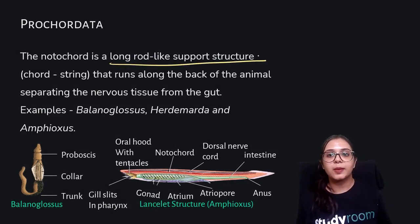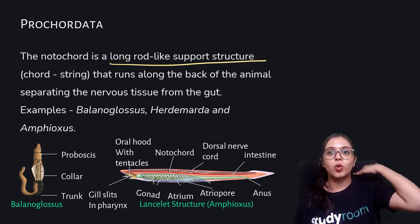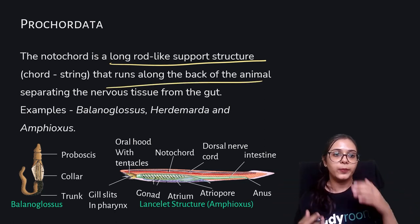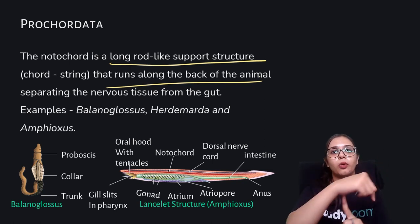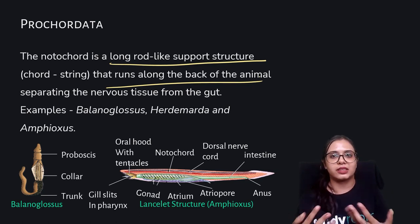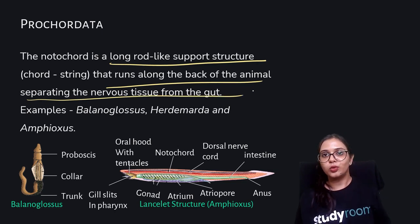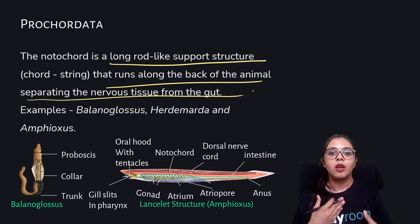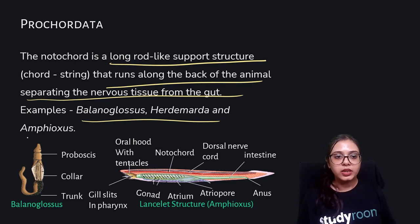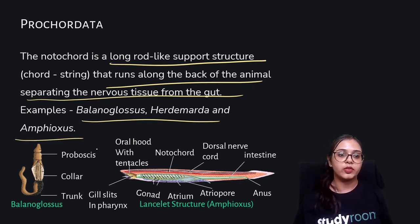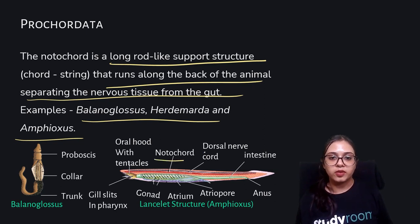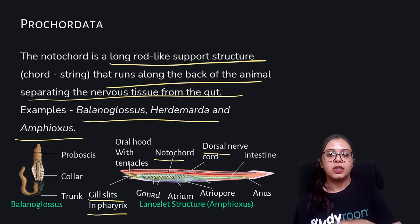The notochord is a long rod-like support structure that runs along the back of the animal, providing support to the whole structure — like a support pillar around which the whole organism is able to exist. It also separates the nervous tissue from the gut. Examples are Balanoglossus, Herdmania, and Amphioxus. In the diagram you can see Balanoglossus with its proboscis, collar, and trunk, and Amphioxus showing the notochord, dorsal nerve cord, and gills.